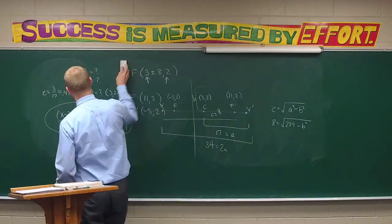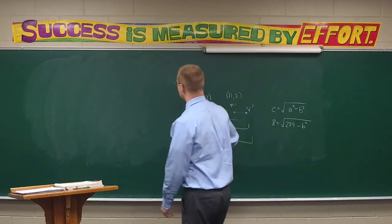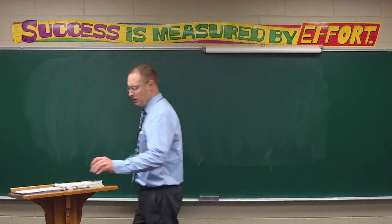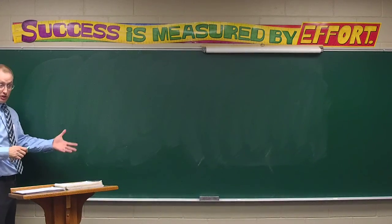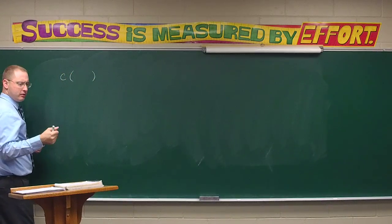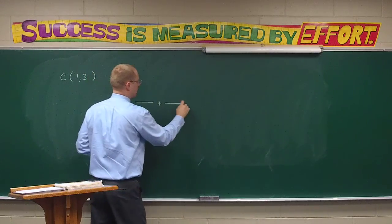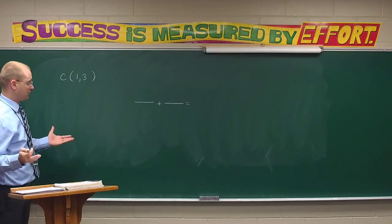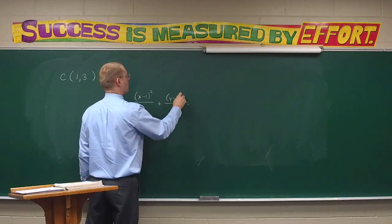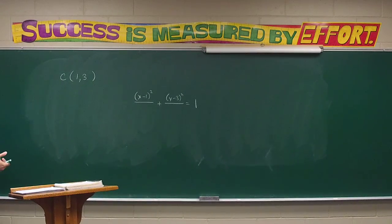Let's take a look at letter A. O-prime — their way of talking about a translated center — is at (1, 3). So I already know a lot: the equation will start (x − 1)²/? + (y − 3)²/? = 1. It's just the two bottom numbers I need. It also tells me — if the major axis is 10, then each side is 5. So a squared is 25.